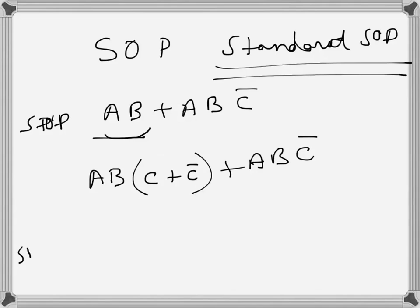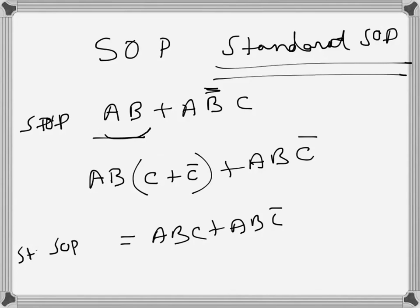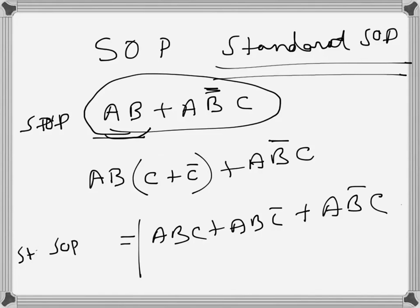So the standard SOP expression would be: a·b·c + a·b·c-bar. The original given SOP was just a·b, and if it's said to express it in standard SOP, then this expanded form is the answer. This is the given SOP expression, and the standard SOP is this one.